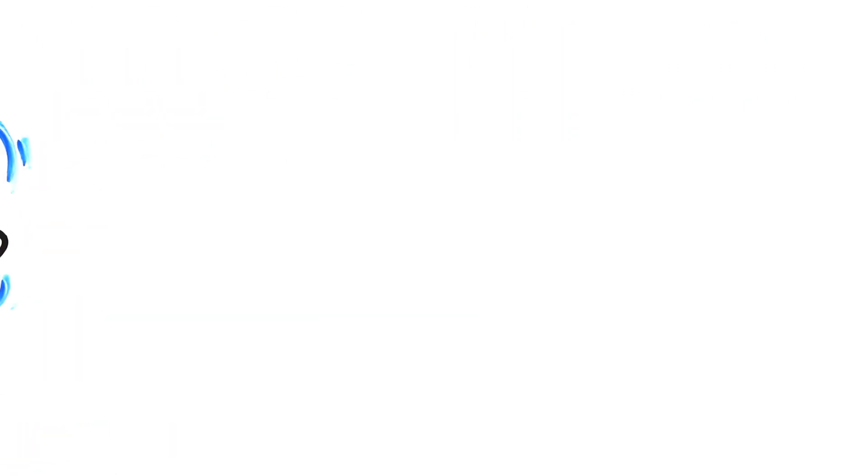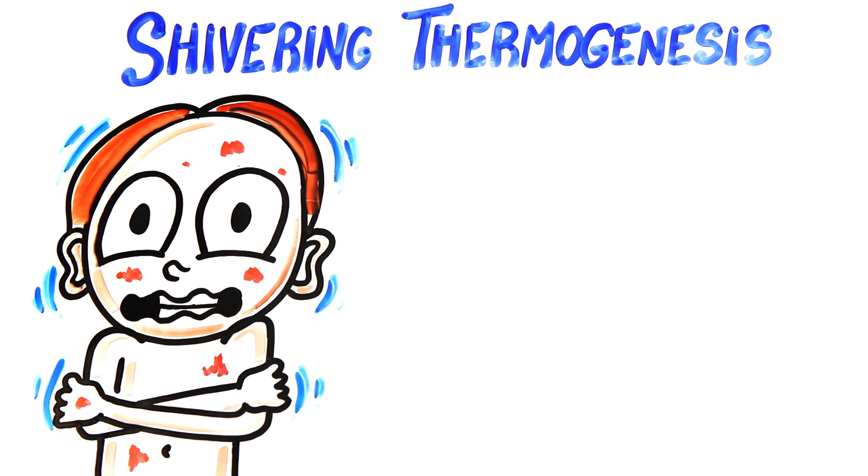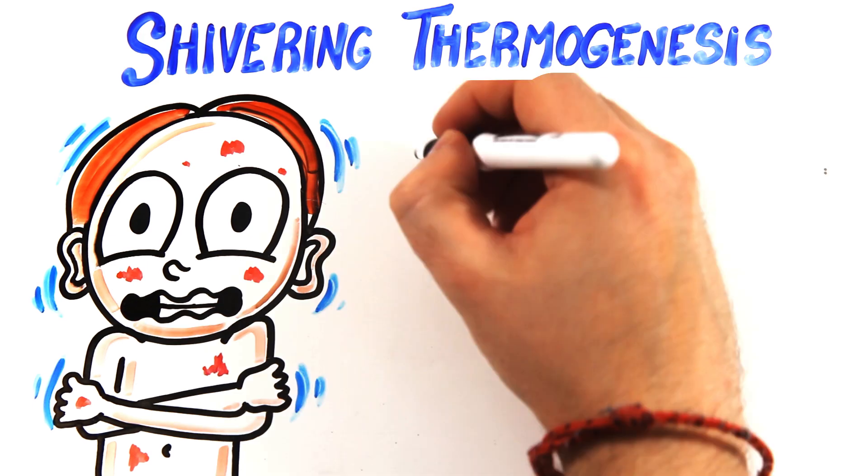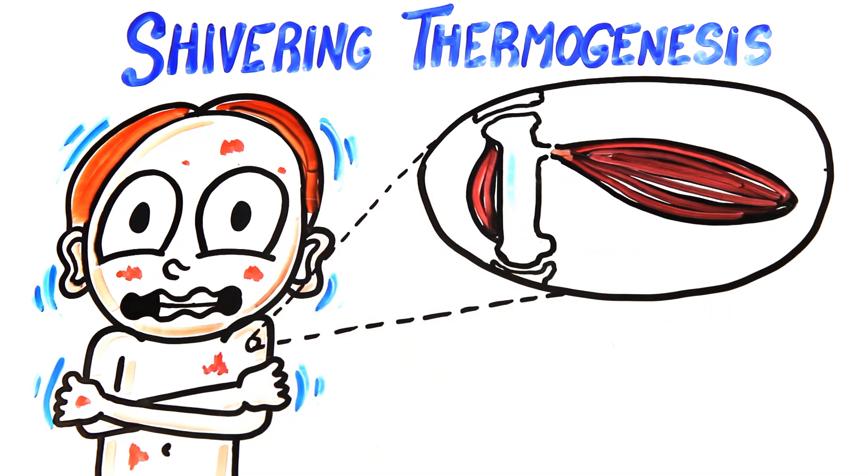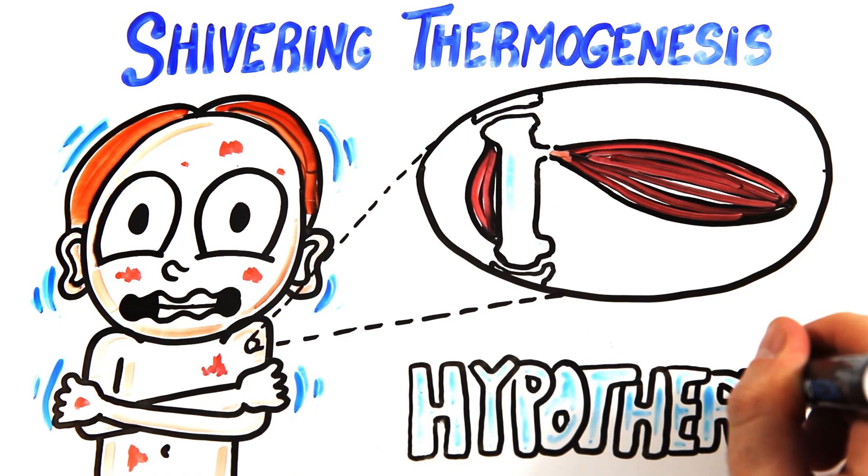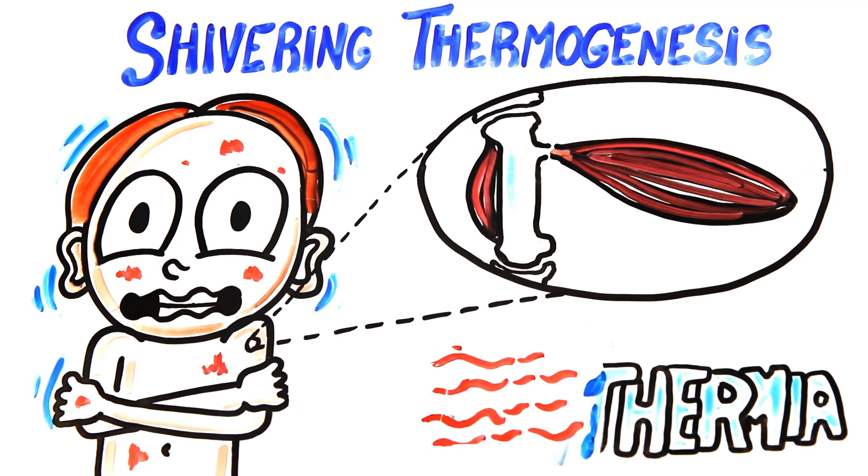But if all else fails, our body undergoes shivering thermogenesis as a last-ditch effort. By constantly contracting our skeletal muscles, our body induces shivering in an attempt to produce enough heat to prevent hypothermia.